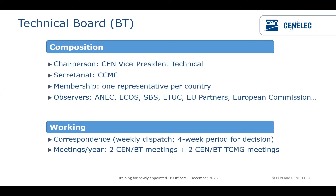The membership consists of one member per country from the 34 NSBs. We also have a series of observers — what we call the societal organizations, like ANEC, ECOS, SBS, and ETUC. And also, of course, some European partners — organizations having a big interest in supporting several TCs — plus the European Commission.